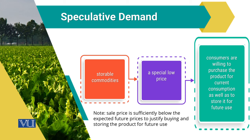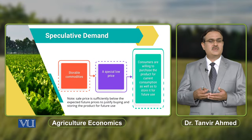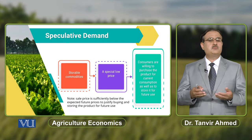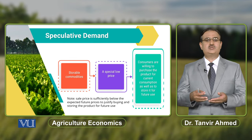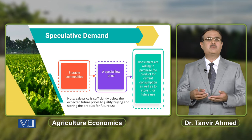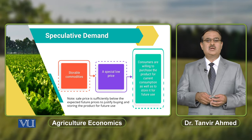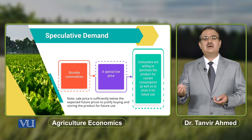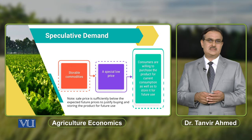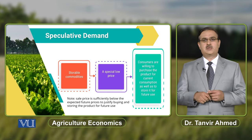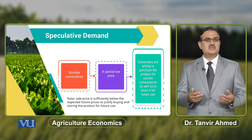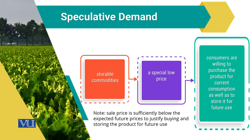If we discuss this from a consumer perspective, there is speculative demand by a consumer who is in a departmental store. When we go to a departmental store, there is a special promotion on a particular commodity — a price reduction. The store has a promotion where the price of a particular commodity is 20% less than its normal price, and that commodity is also a storable commodity.